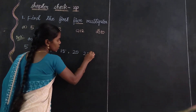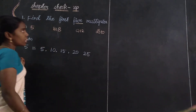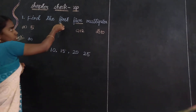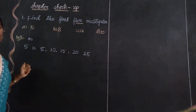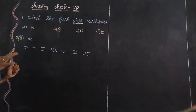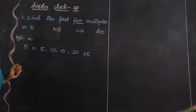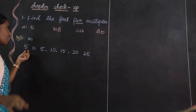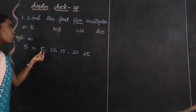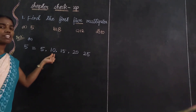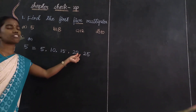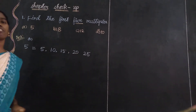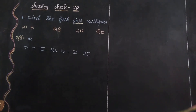So in this, why? Only find out the first 5 multiples of this number. So only find out the first 5 multiples. That is the first value 5: 1 five's are 5, 2 five's are 10, 3 five's are 15, 4 five's are 20 and 5 five's are 25.